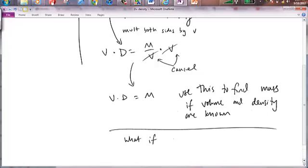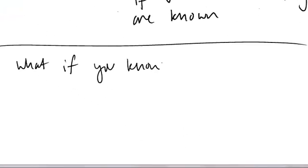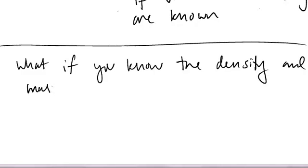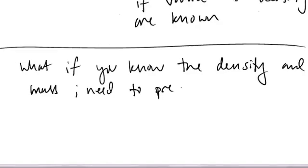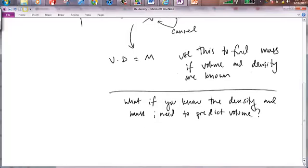So here's the question again. What if you know the density and the mass? And you need to predict the volume. Annalie, is your hand up? Tell me. Yeah. But let me show how that gets there. Annalie just said it's going to be V equals M over D. But I want to show the algebra steps for how to get there.